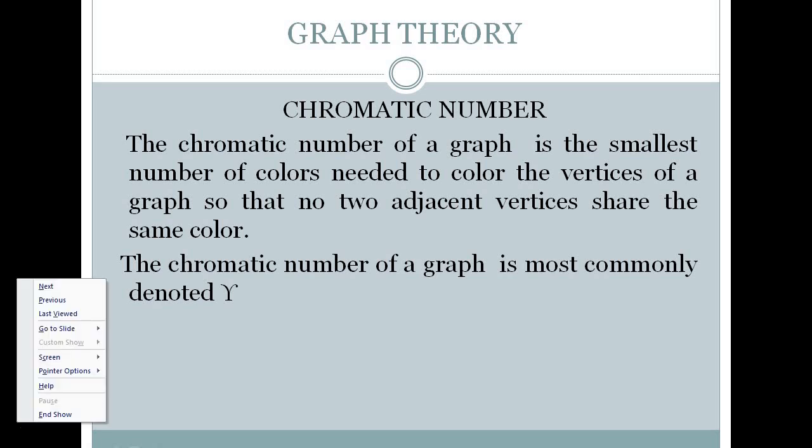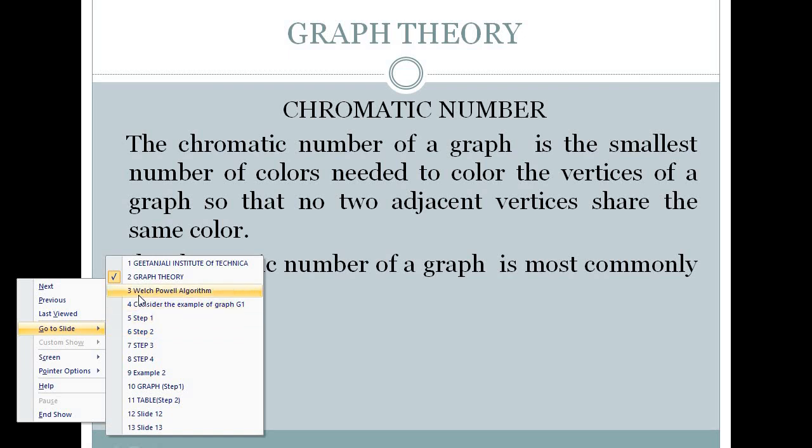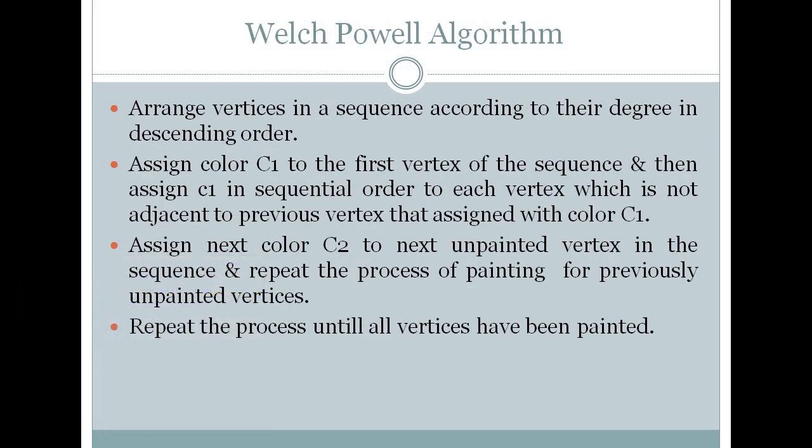There's an algorithm called the Welsh-Powell algorithm which gives us the minimum number of colors required to paint a graph. Step number one says arrange all the vertices in sequence of their degrees in descending order. What is a degree? Degree is basically the number of edges emerging to or outgoing from a vertex. Accordingly, we will make a table in which the vertex with the highest degree will be placed first, and then all the vertices will be arranged.